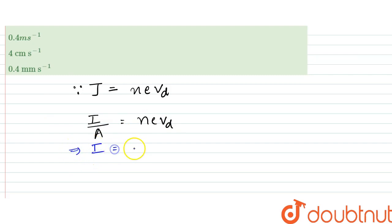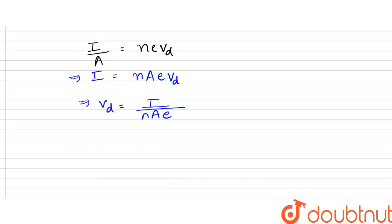From here the current would be equal to n A e vd. So from here vd would be equal to I by n A e. So from here what we could say is that when we substitute the values, since the current that we have is 5.4 amperes.